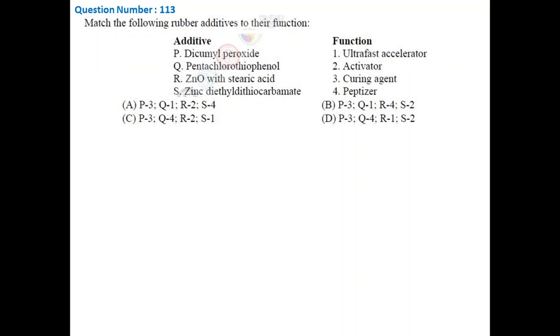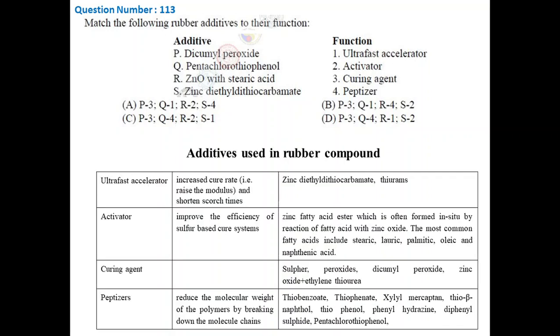In this question, we need to match rubber additives with their function. In a rubber compound, a lot of additives are used to achieve desired processibility and performance. The function and name of some of the additives are shown in the slide. Based on this information, the correct answer is C.